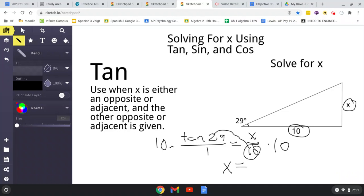Tan of 29 times 10. x equals 5.543. 5.543. So, that is how to solve for x using tan, sine, and cosine. Alright.